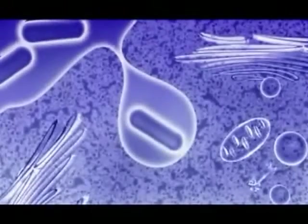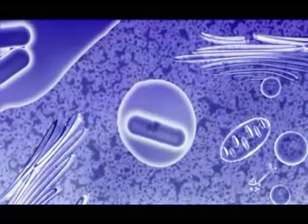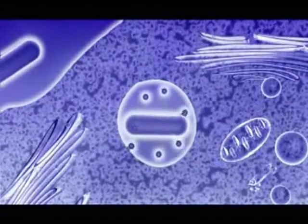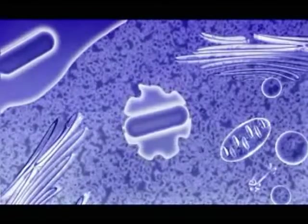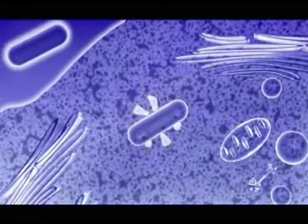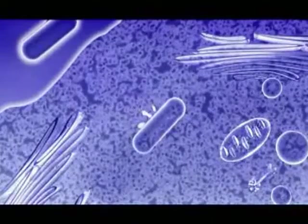Listeria synthesizes Listeriolysin O and phospholipases. LLO, a pore-forming toxin, is targeted to the vacuolar membrane and perforates it. PLC aids vacuolar membrane disintegration. The vacuolar membrane has disintegrated, so Listeria are released into the cytoplasm and multiply.